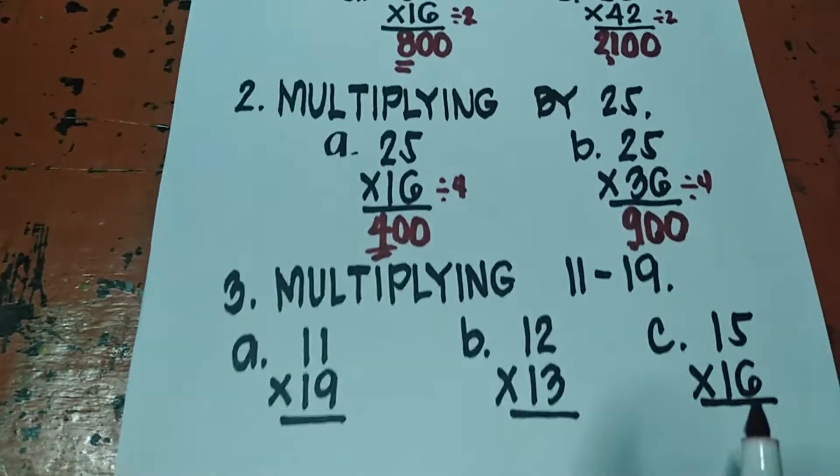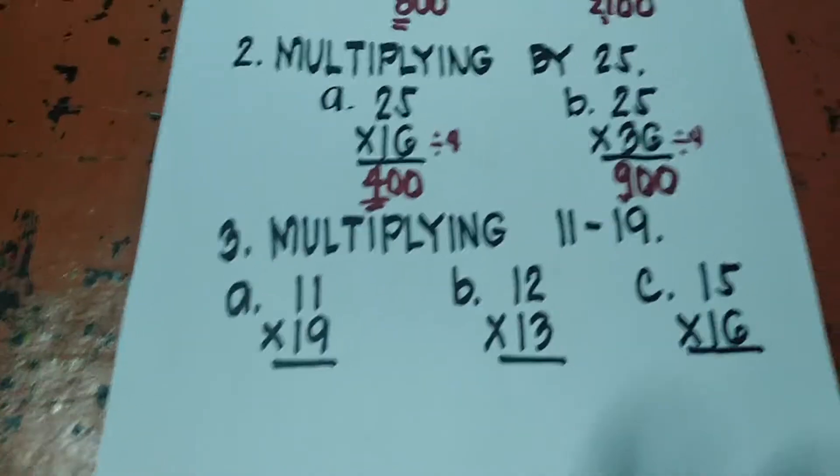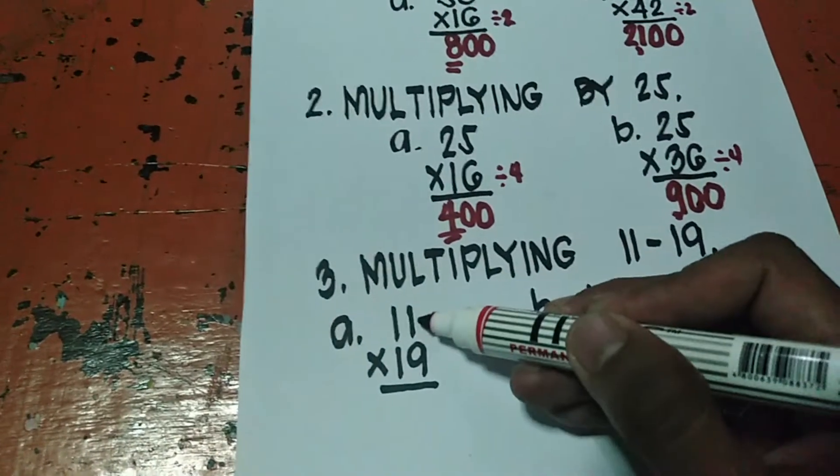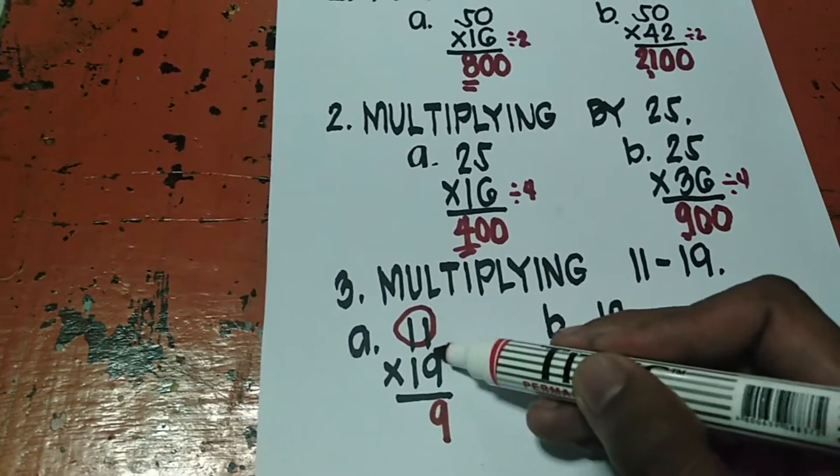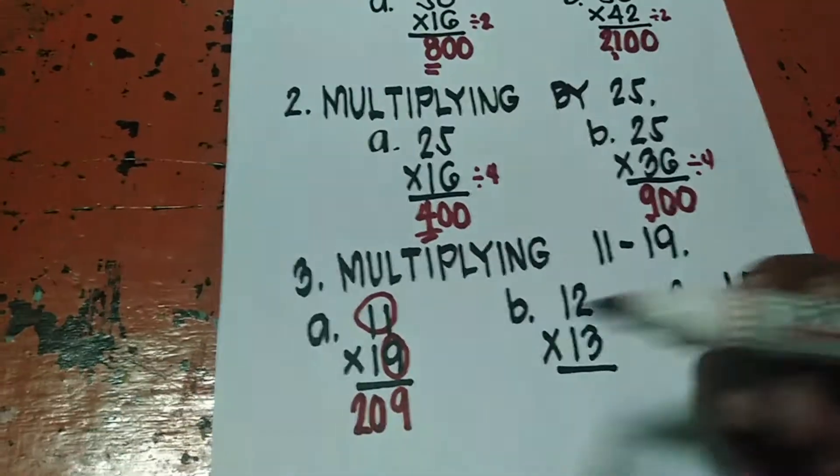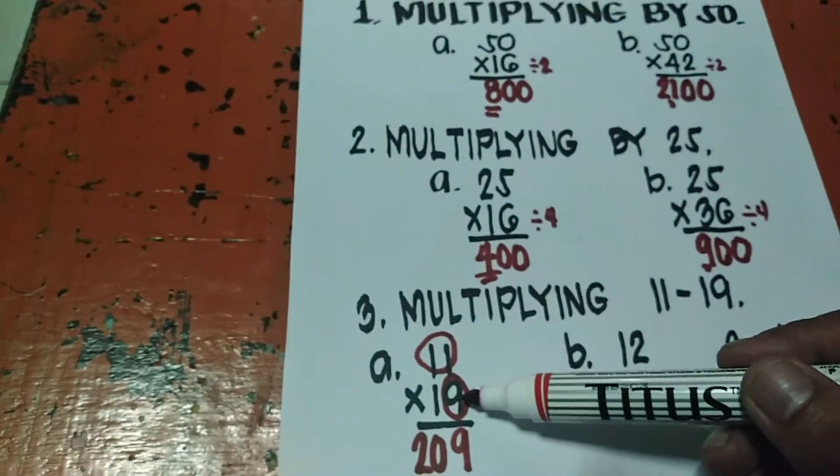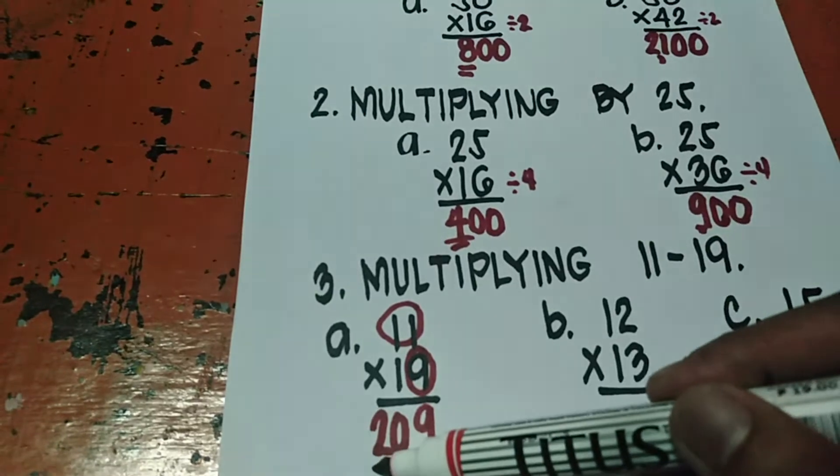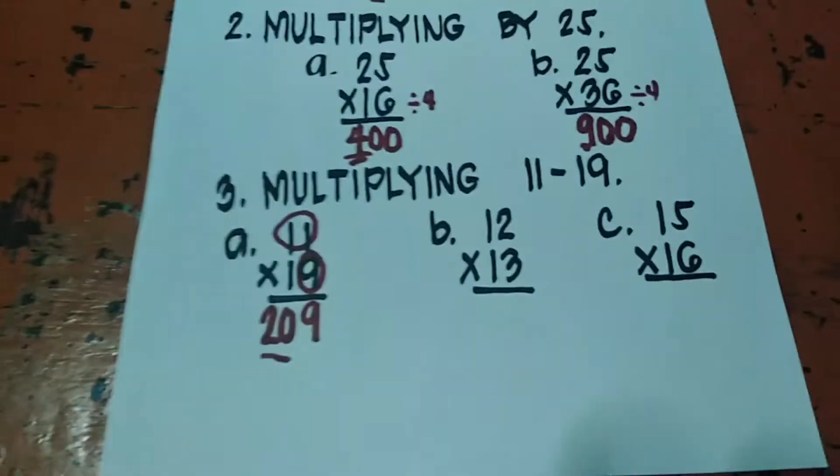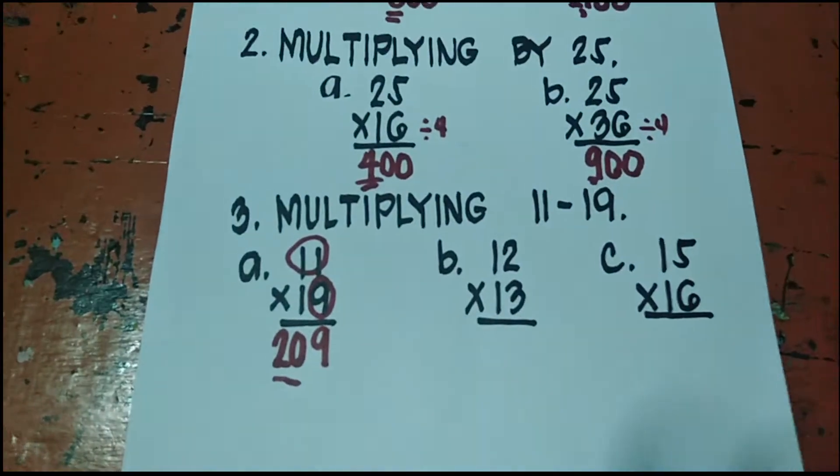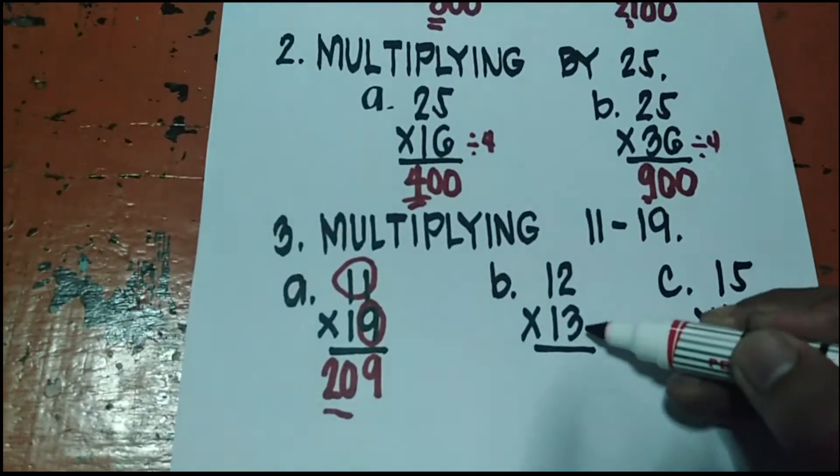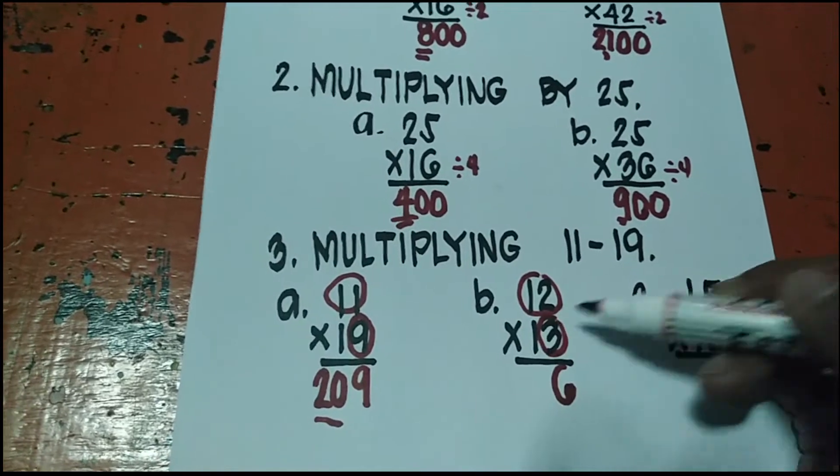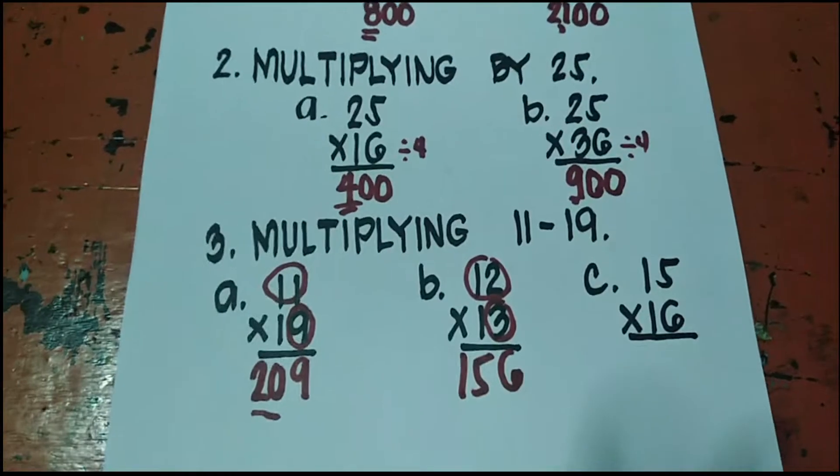Susunod naman natin yung multiplying 11 to 19. Yung mga kailangan ng mga shortcut, 11 to 19. So 11 times 19. Anong unang gagawin natin? 9 times 1 is 9. Tapos 11 plus 9 is 20. Unang ito times, 9 times 1 is 9. Tapos 11 plus 9 is 20. Ang answer, 209. Ituloy natin. Ito na yung 12 times 13. Unang ito times siya, 3 times 2 is 6. Then 12 plus 3 is 15. So ang answer natin is 156.